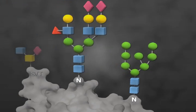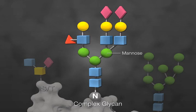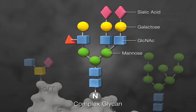N-glycans can also be complex, which means the mannose residues are only present at the core and the branches are extended with other monosaccharides, such as N-acetylglucosamine or GlcNAc, galactose, sialic acid, and fucose.